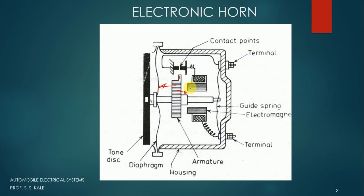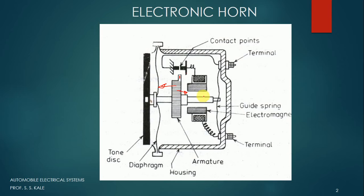So the armature moves towards the right side because of the activated electromagnet. When it moves a certain distance, the contact breaker point opens, the electromagnetic field collapses, and because of the guide spring it moves back towards the left side. When moving left, the force on the contact breaker is removed, and they come in contact with each other again. When they contact again, the magnetic field is generated once more, the electromagnet is activated, and the armature moves right again. The contact breaker opens, the field collapses, and the spring moves it left. This is a continuous movement — right side because of the electromagnetic field, and left side because of the guide spring.